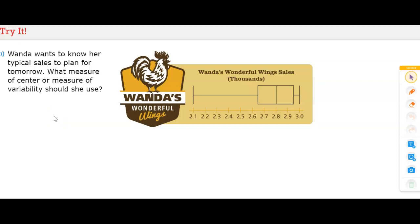If we were to use the mean, that would give us the average of all of the data from here to here. But, because most of the data is within this portion of our line plot, then mean would not be a good measure of center for her to use. A good measure of variability would be best, and that would be the median, because the median would give us this number here, which is at 2,800. That would be the best data to plan for her sales tomorrow.